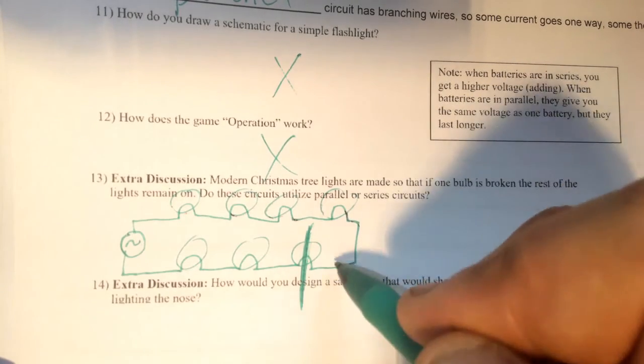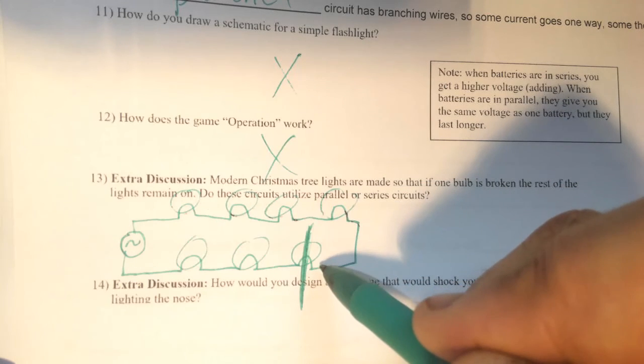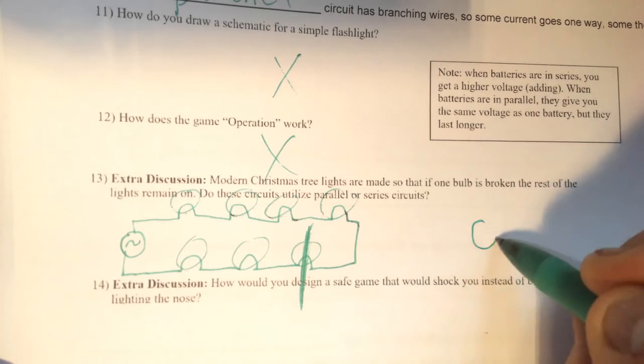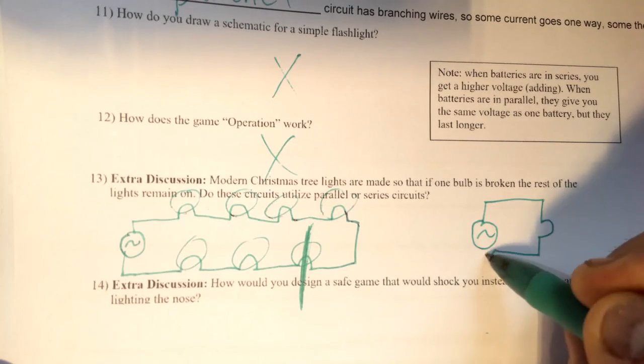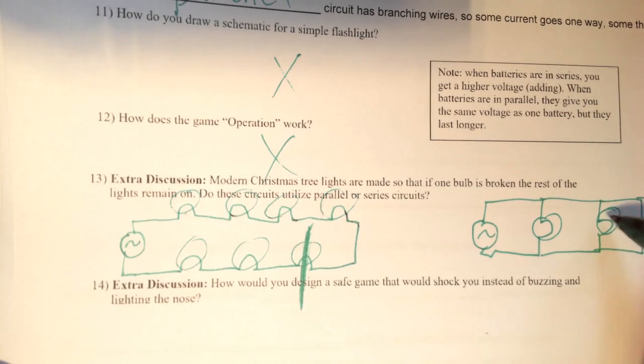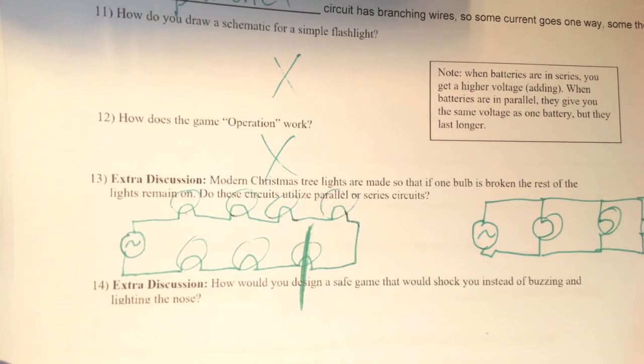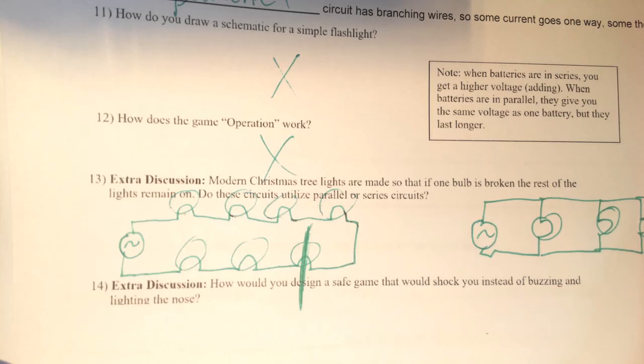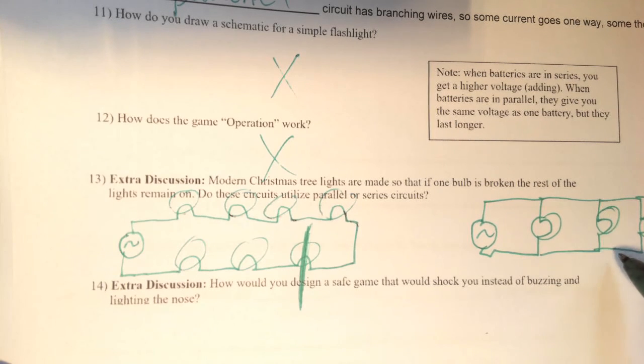In a modern situation, we have it like this. So if this light bulb burns out and the wire on the inside of the bulb breaks, current cannot flow this way. But current will still be able to make it through this light bulb and this one and this one. And so those will still be lit up. So this is going to be a parallel circuit.